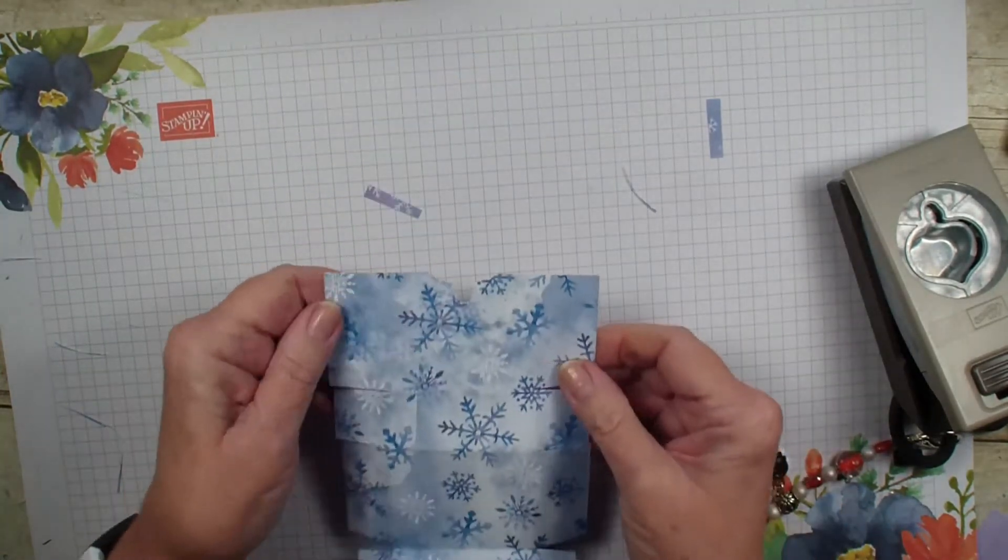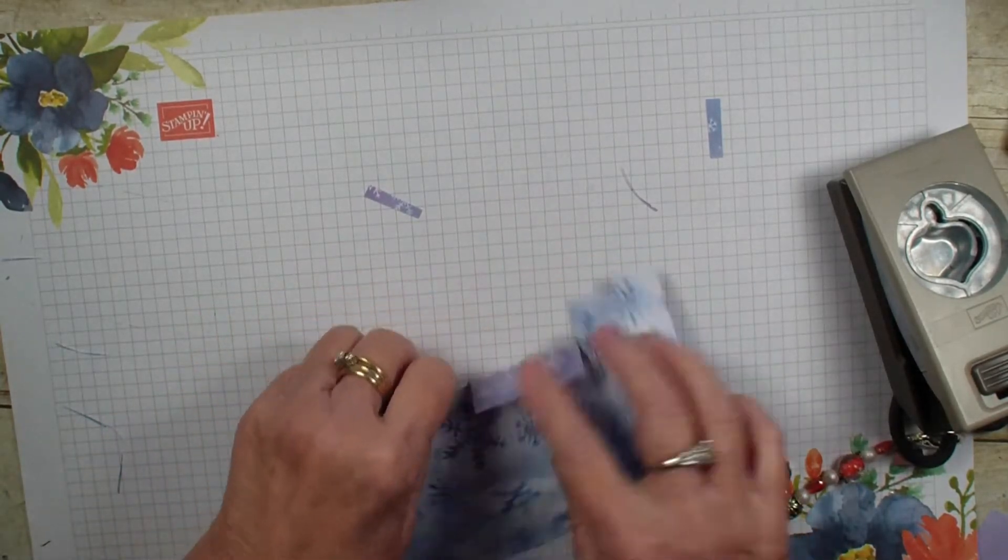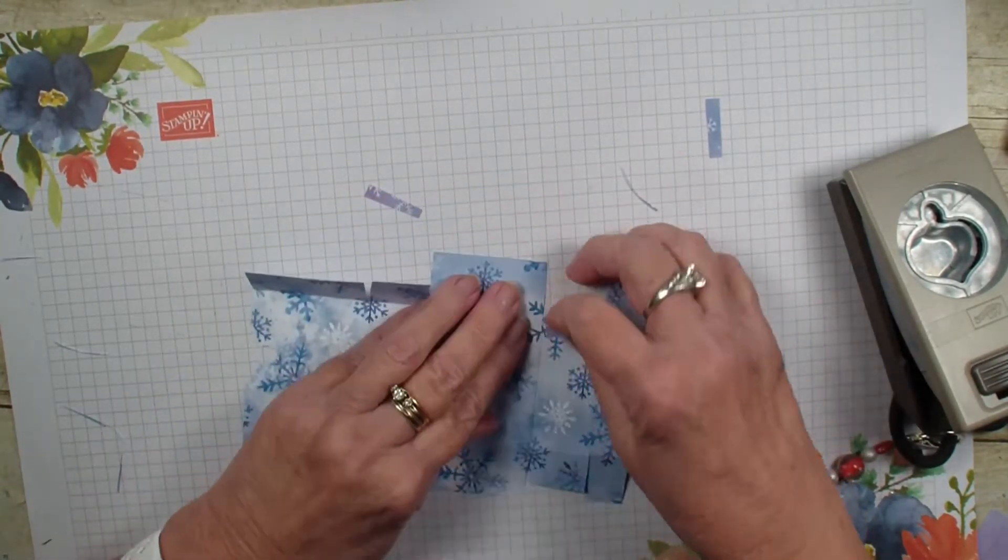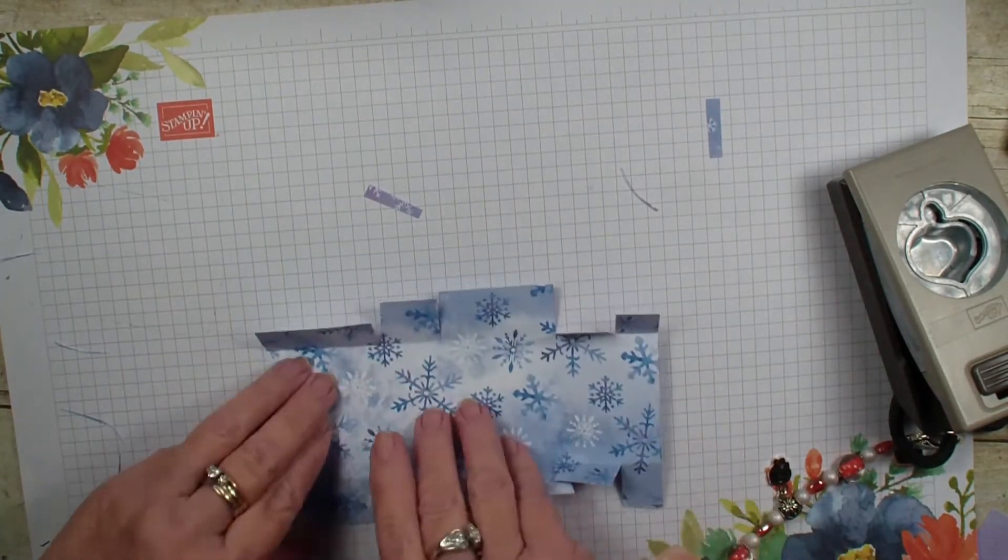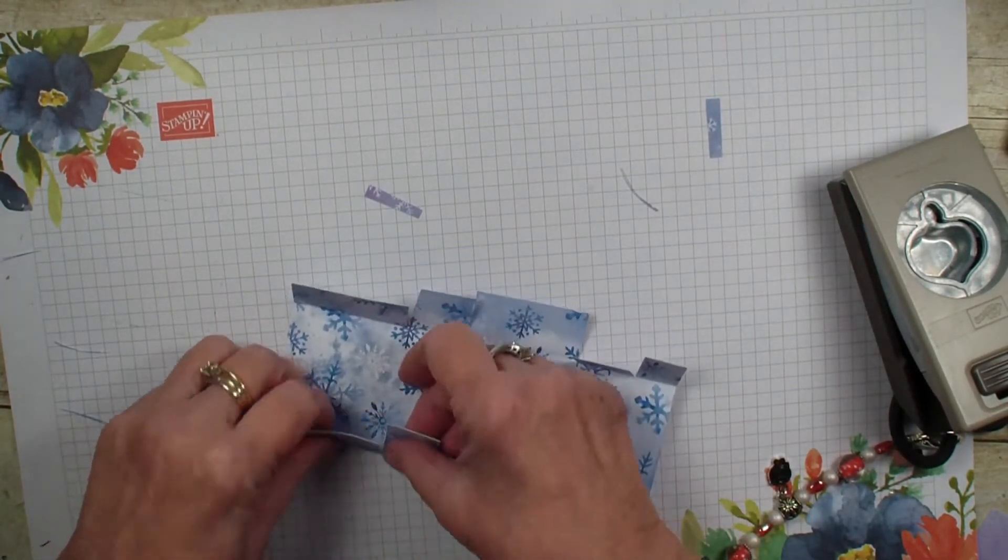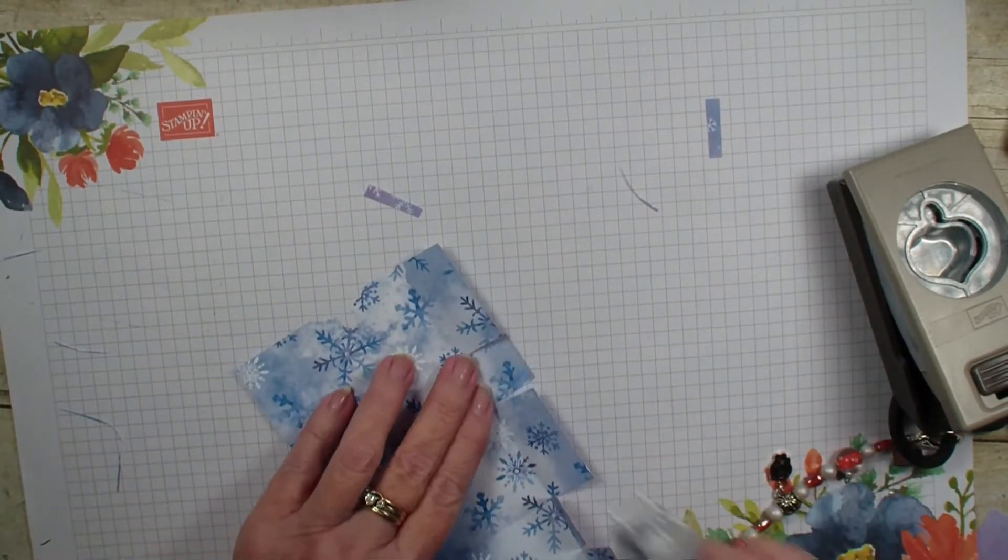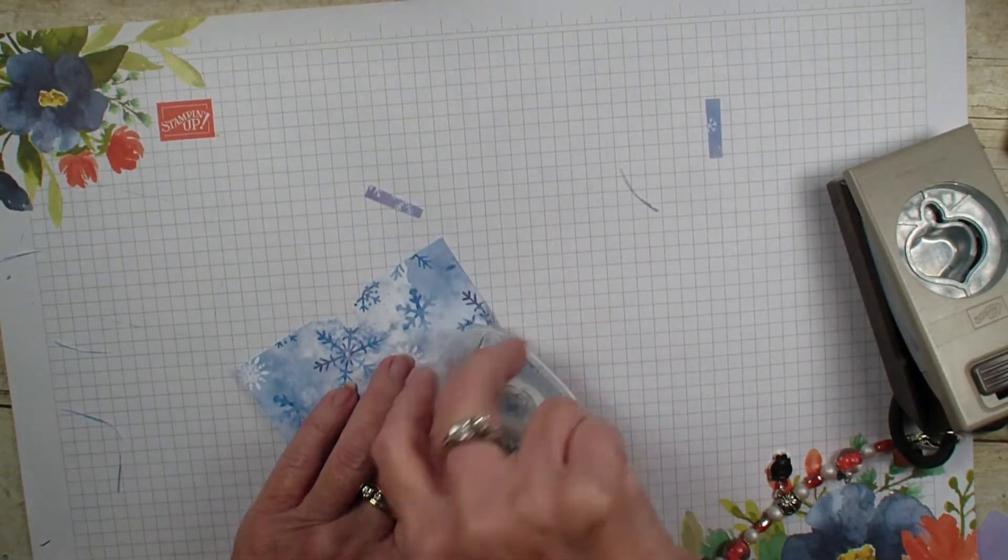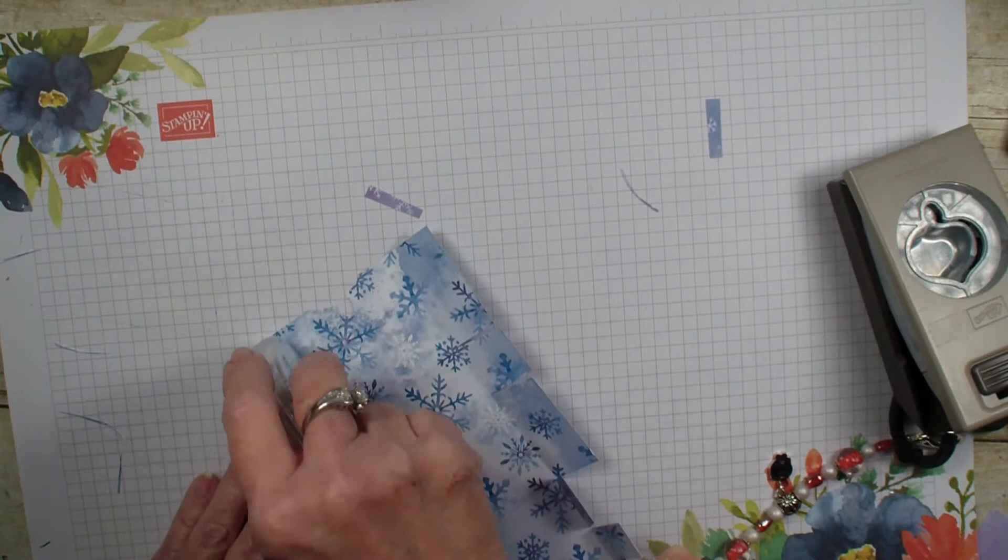Next what I'm going to do is, I want the blue paper on the inside, so I'm just going to work those score lines back and forth. This is on the inside.